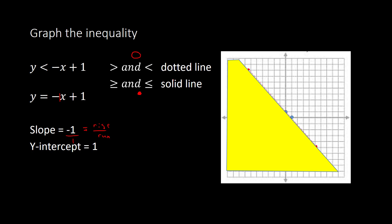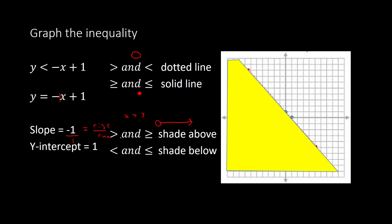So there is a comparison between one and two variables, which might help you remember when to use dotted and when to use solid. The other difference is the shading. If it's greater than or greater than or equal to, you shade above, because the numbers are bigger above the line — analogous to shading to the right with one variable. If it's less than or less than or equal to, then you shade below, like in this example — analogous to shading to the left with one variable.